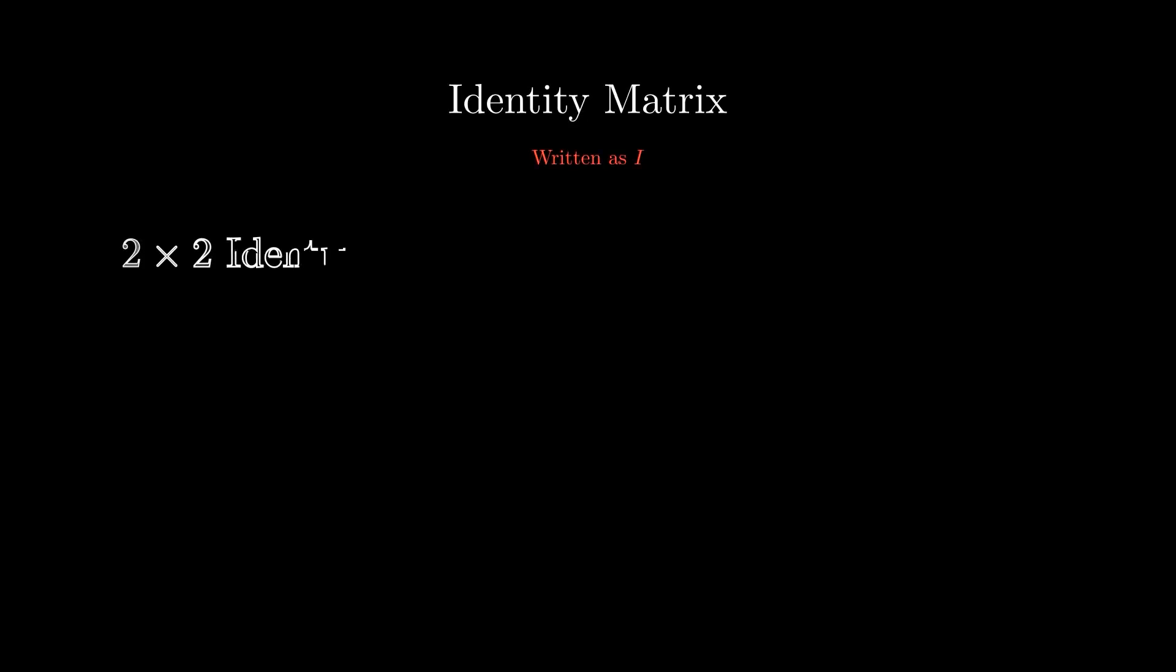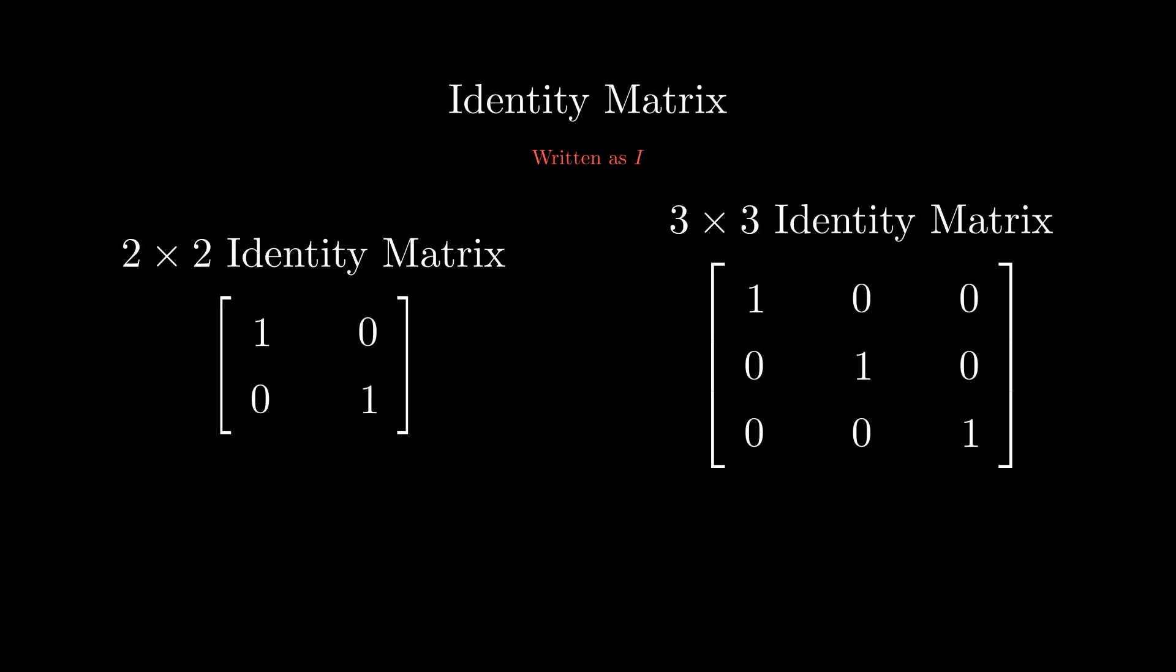We also have a special matrix called an identity matrix. This matrix is all zeros except for the main diagonal that has all ones. If we multiply the identity matrix by any matrix, we get back the original matrix.